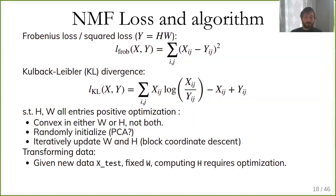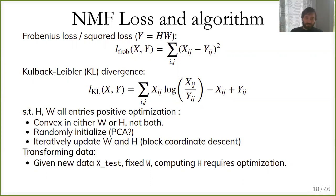Even though X is approximated by a linear product, computing H and W is a very nonlinear process. Particularly, transforming new data given a fixed W requires running an optimization algorithm — you can't simply invert the matrix as in PCA. So getting the latent representation requires running gradient descent, which is much more complicated than PCA/LSA where you just do a matrix multiplication.